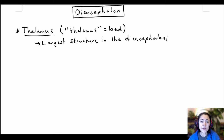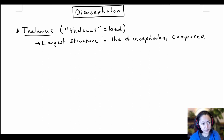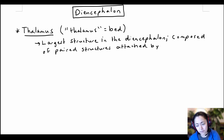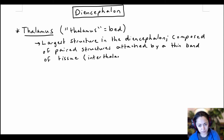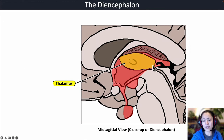The thalamus itself is composed of paired structures attached by a thin band of tissue known as the interthalamic adhesion. It is good to know that the interthalamic adhesion holds the two lobes of the thalamus together, because you can actually use this thin band of tissue to help you locate the thalamus.